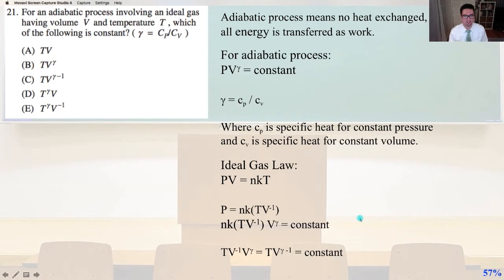So, an adiabatic process means no heat's exchanged. All the energy is transferred as work. For an adiabatic process, pressure times volume raised to gamma is constant, where gamma again equals Cp over Cv.